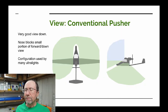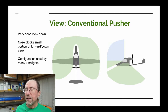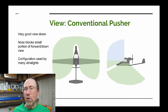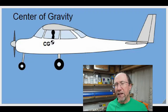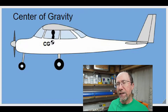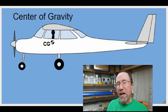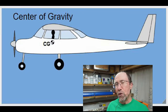Now we switch to the configuration frequently used by ultralights — the conventional pusher. In general, on these configurations, the pilot is moved a bit farther forward than in the tractor configuration. The reason is that the engine weight is back at the trailing edge of the wing, so the pilot must be moved forward to add weight near the leading edge. On the tractor configuration, the heavy engine up front counterbalances the tail, and the pilot sits very close to the center of gravity of the wing — allowing a wide range of pilot weights without significantly moving the CG.